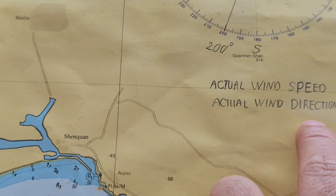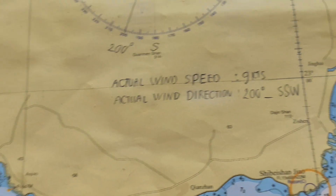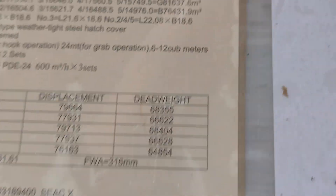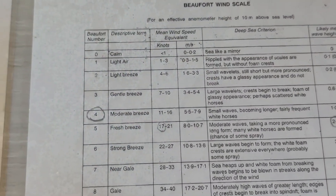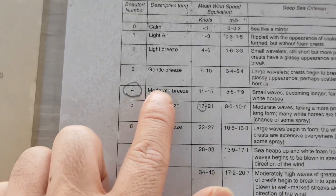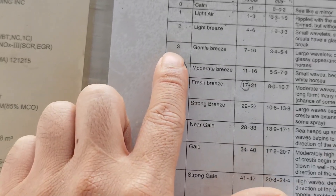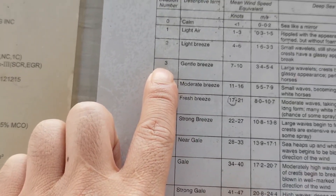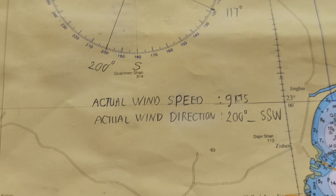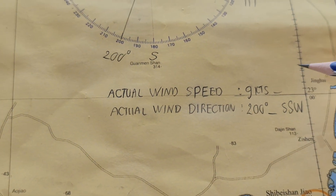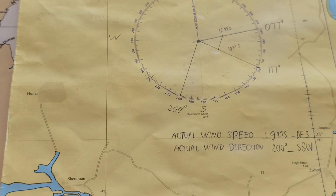For the wind speed, I will show you how to get the Beaufort force using the wind scale. Our wind speed is 9 knots. On the scale, 9 knots falls between 7 and 10, so the Beaufort number is 3 — Beaufort Force 3.